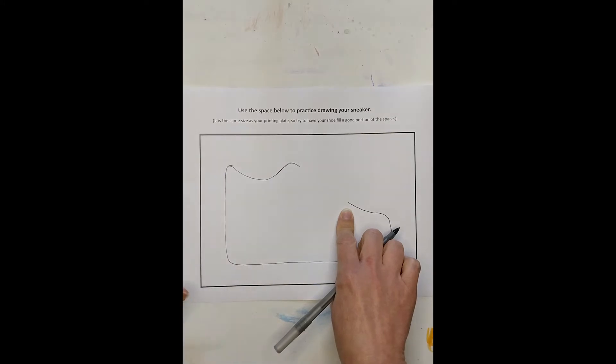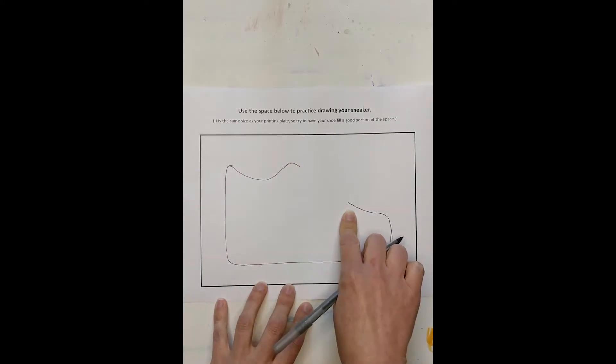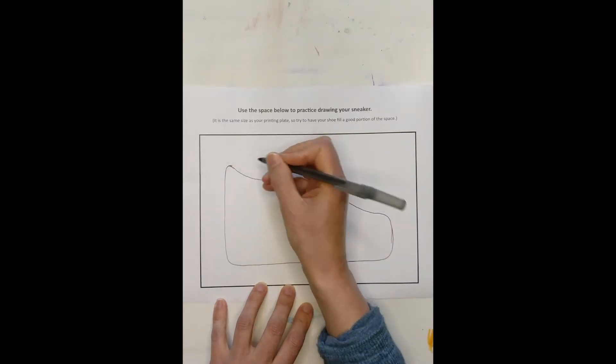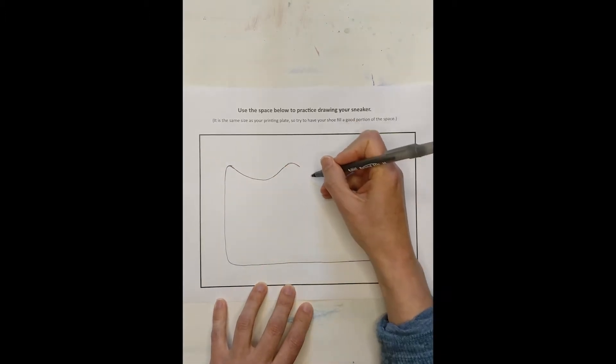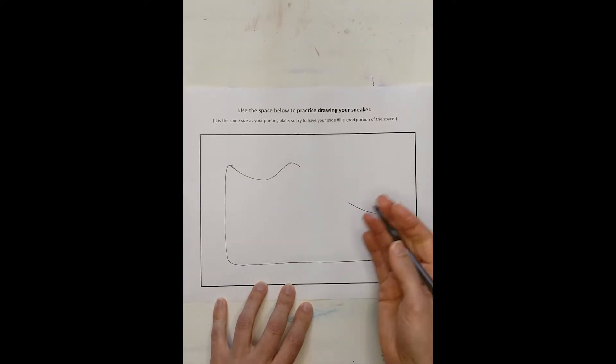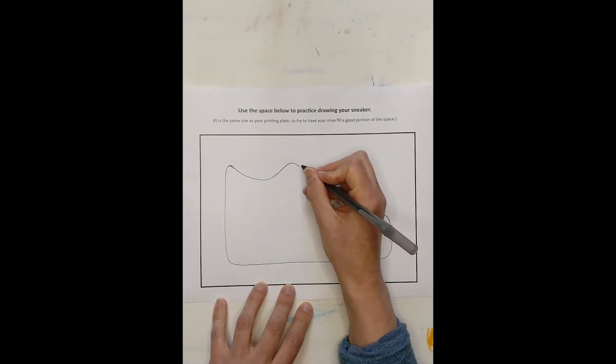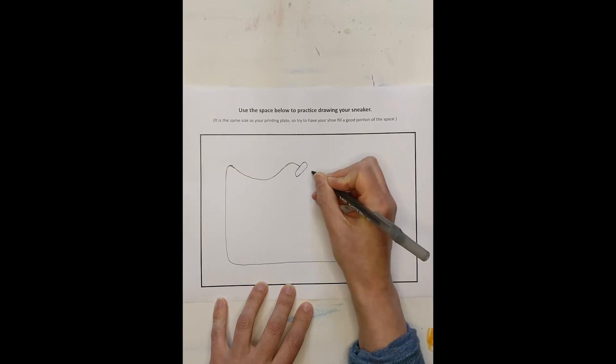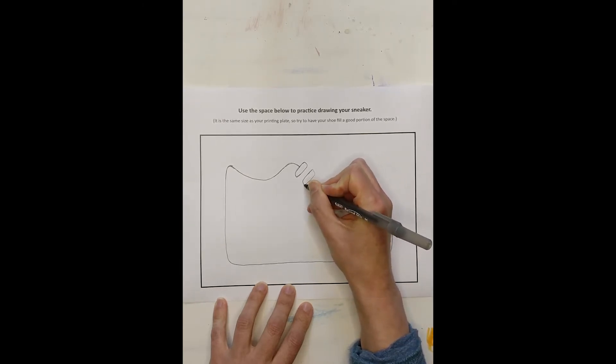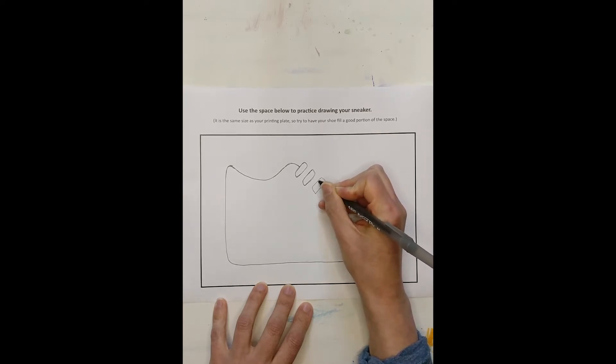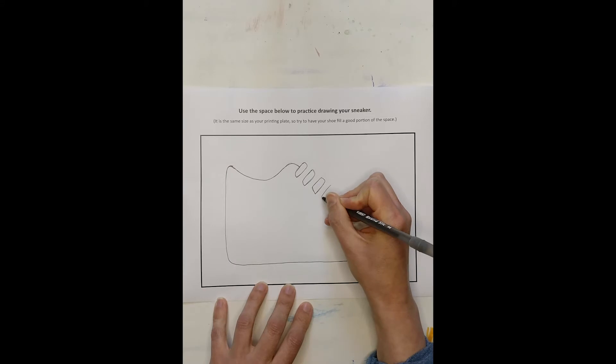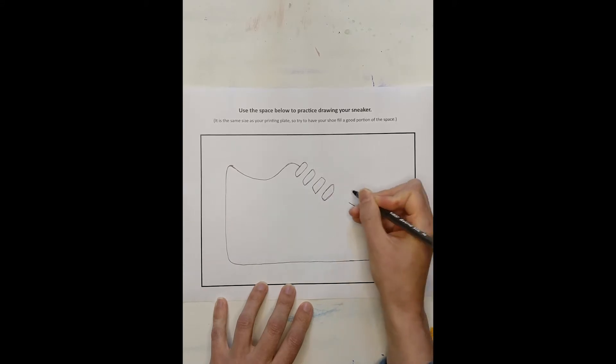Okay, so that's kind of the basic sneaker. And notice I left this space open just as the step-by-step does for the laces. And it doesn't matter as much when you're just drawing it. If you're drawing it in pencil, you could certainly draw this, do the laces, and then erase. But when we're doing our printing plate and we're making those marks, once you make a line, it's there for good because you're creating that indent. So now I'm just going to kind of create these rounded rectangle lace things.